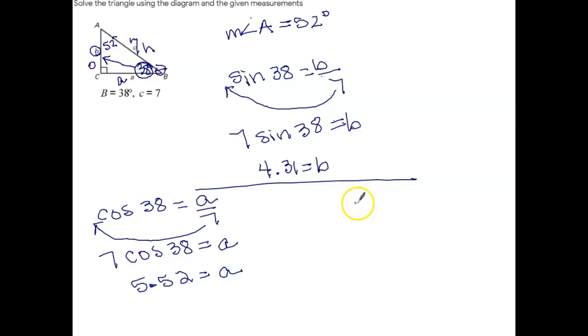Now, if you were to set this up using the Pythagorean theorem, you would get the same thing. You would do a squared plus 4.31 squared is equal to 7 squared. And from there, you would just use the Pythagorean theorem to find what a is equal to. And eventually, you would get to the point where a is also equal to 5.52.